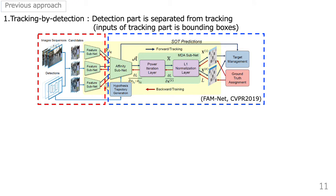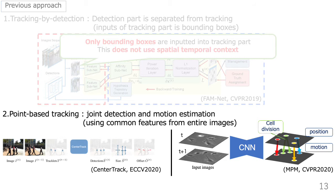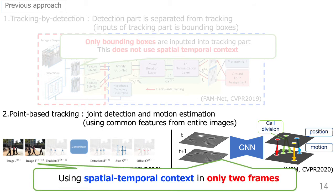Tracking by detection is one of the most common approaches to multi-object tracking. A recent trend is to incorporate existing bounding box-based detectors into trackers and simultaneously train a detector and tracker. However, these approaches do not use the spatial context outside the bounding boxes. Since cells have similar appearances and their shapes change during migration, the context outside the bounding box is important. To effectively use the spatial context, point-based methods such as CenterTrack for detection and motion estimation have recently attracted attention. However, these methods only use two frames to extract spatio-temporal context, which is not enough.